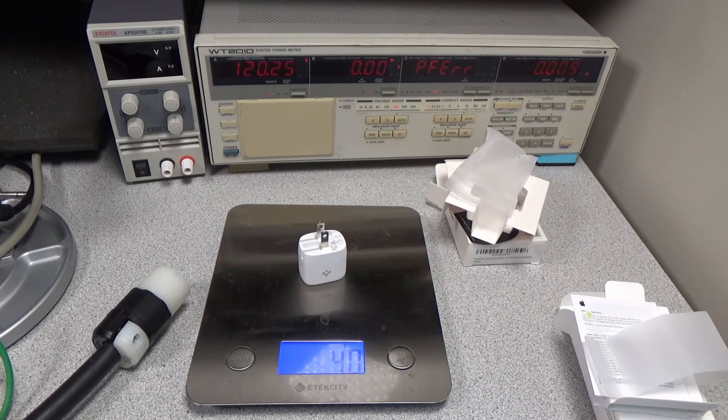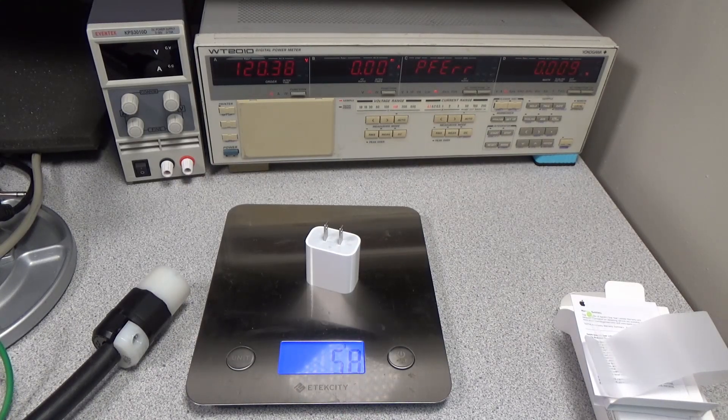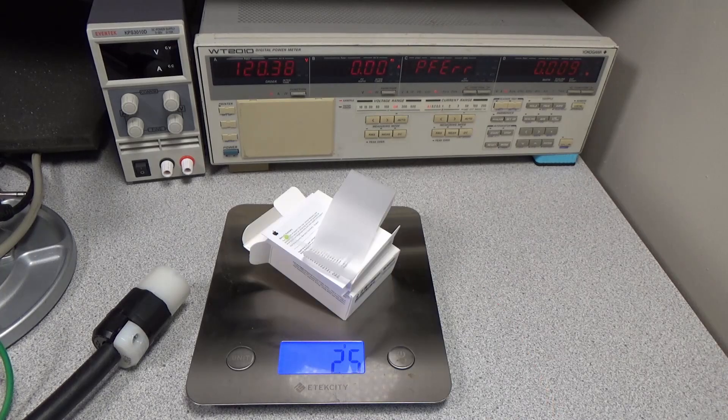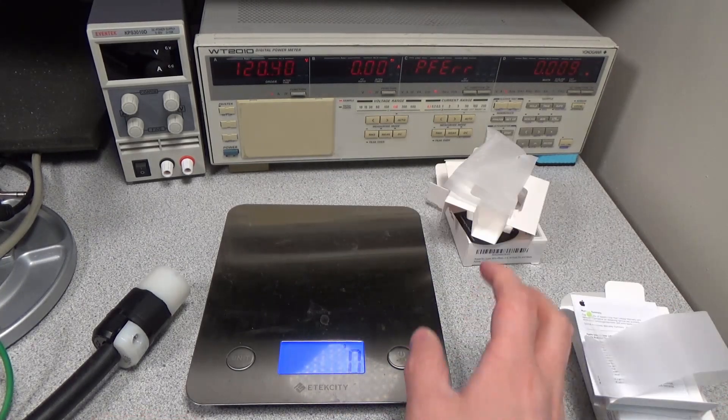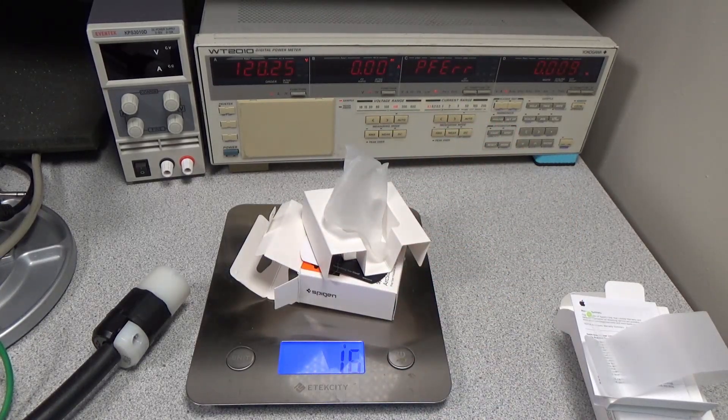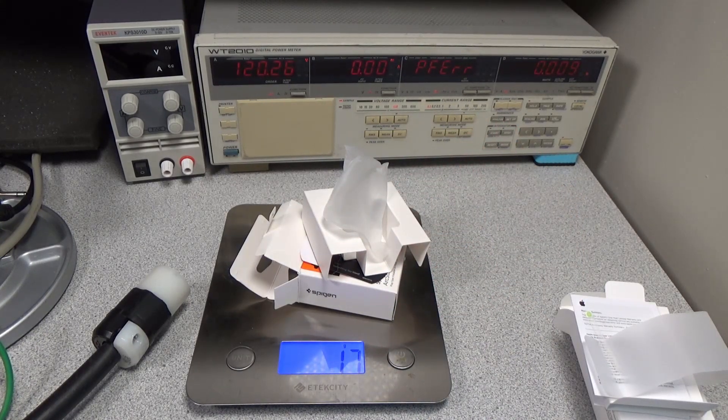On a scale, the Spigen weighs 40 grams, the Apple weighs 58 grams. And for fun, the packaging on the Apple device weighs 25 grams, and the packaging on the Spigen weighs 17 grams. The heavier adapter must have something extra in it. I'm not sure what. Maybe quality.